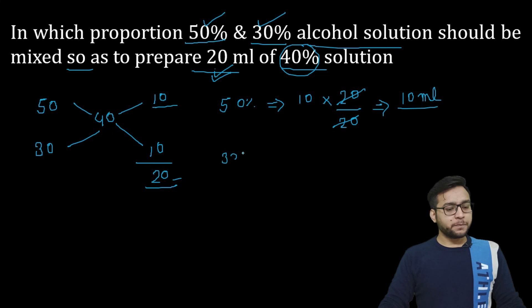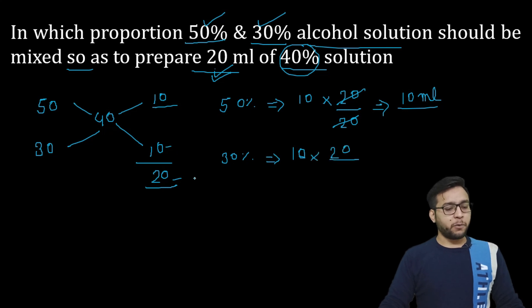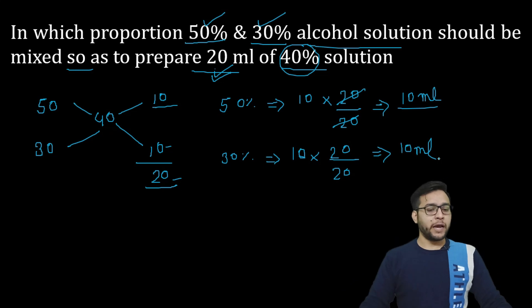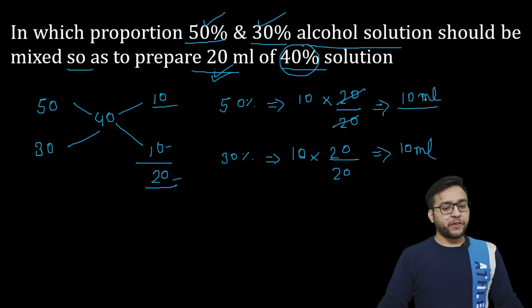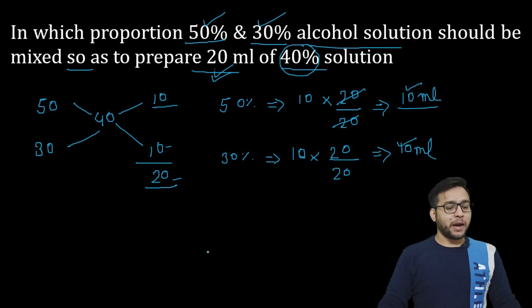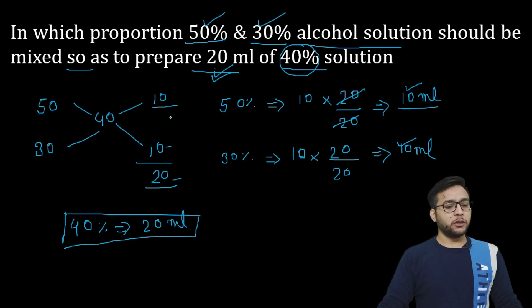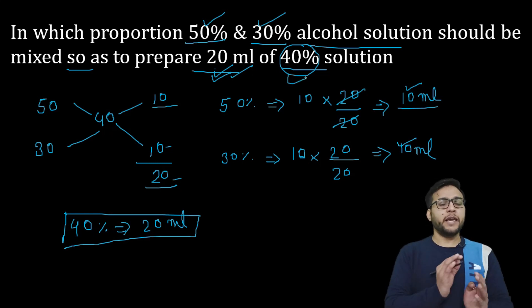ऐसे ही हम 30% के लिए करेंगे — यहाँ पर 10 value लिख देंगे और total 20 ml चाहिए, upon 20 — तो इसका भी 10 ml होगा। Answer clear हो चुका है: 50% का भी 10 ml और 30% का भी 10 ml — इन दोनों का 10-10 ml लेकर हमारा 40% का 20 ml बन जाएगा। यही पूछा था।